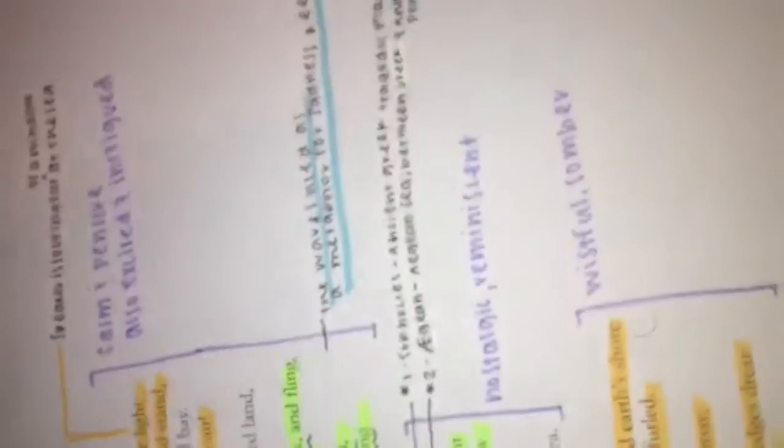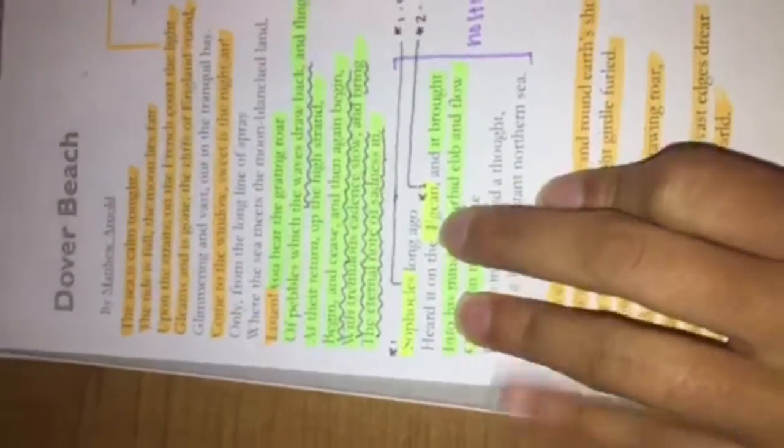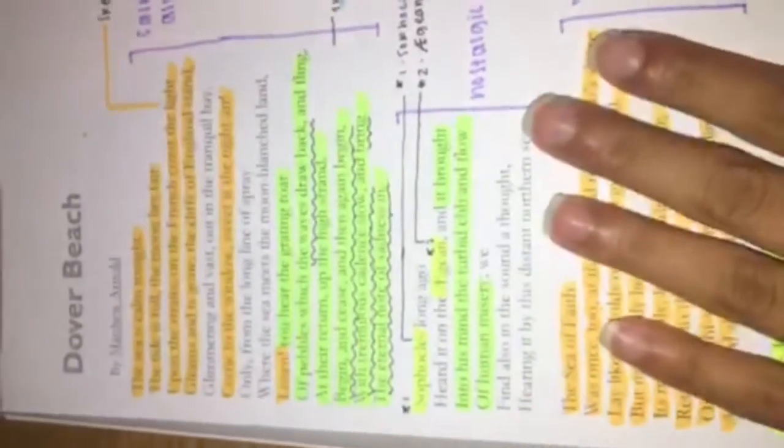The tones, there were a few shifts, so for the first one I put calm and pensive but also excited and intrigued, because he says, listen, come to the windows, sweet as the night air. And then for this one I put nostalgic and reminiscent because it mentions the history of Sophocles and the Aegean.